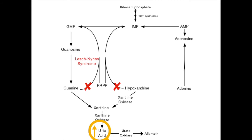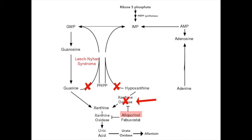It is the uric acid that causes the negative symptoms. If we inhibit the enzyme xanthine oxidase using the drugs allopurinol or febuxostat, then xanthine will not be converted into uric acid and will not cause the negative symptoms. Allopurinol specifically inhibits hypoxanthine's conversion to xanthine, while febuxostat inhibits xanthine's conversion to uric acid.